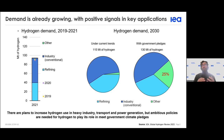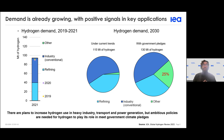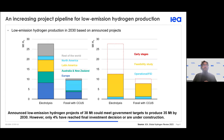Most hydrogen is currently directed to refineries and petrochemical plants. By 2030, about 25% of demand will come from new applications, rather than the traditional uses of hydrogen we have seen previously.